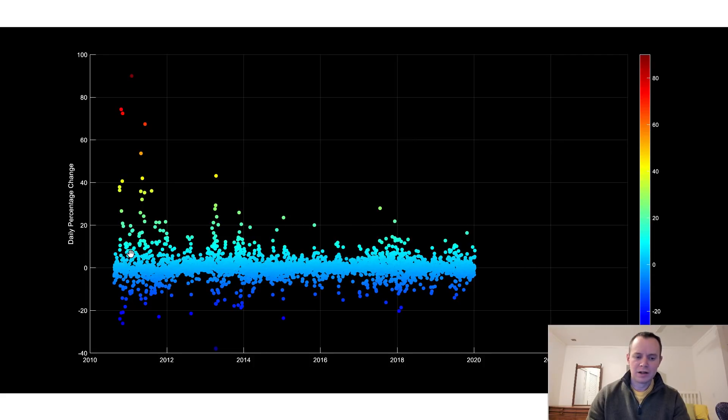But for the most part, Bitcoin, the volatility, the daily volatility is around plus or minus, say, 5% or so.